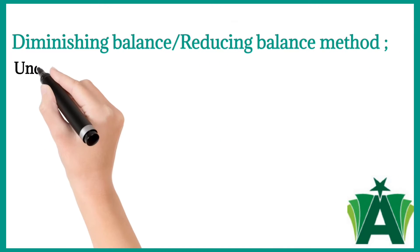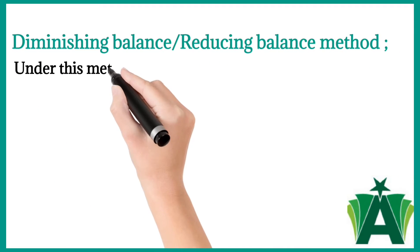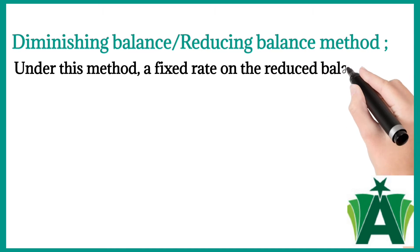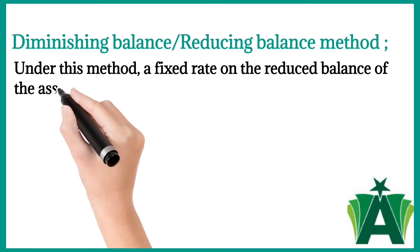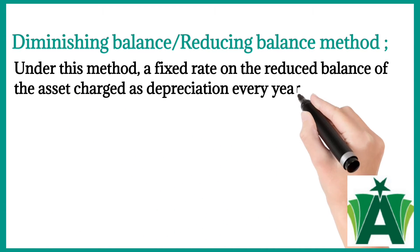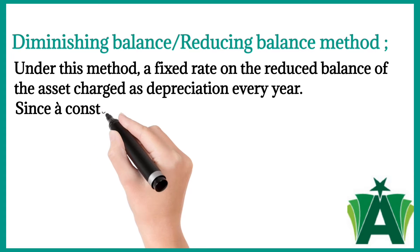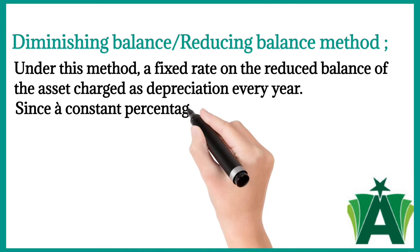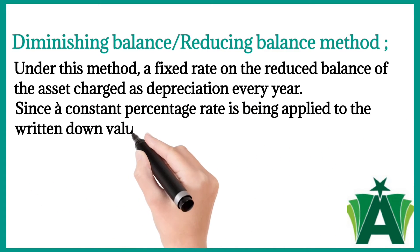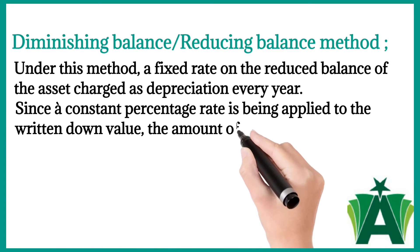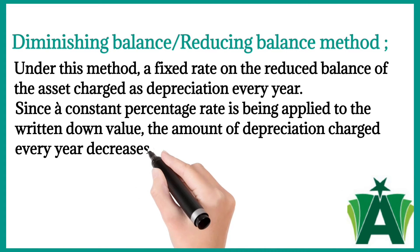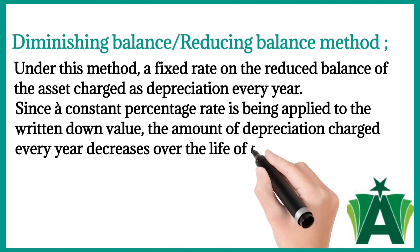Under the diminishing balance or reducing balance method, a fixed rate is applied to the reduced balance of the asset and charged as depreciation every year. Since a constant percentage rate is applied to the written-down value, the amount of depreciation charged decreases over the life of the asset.